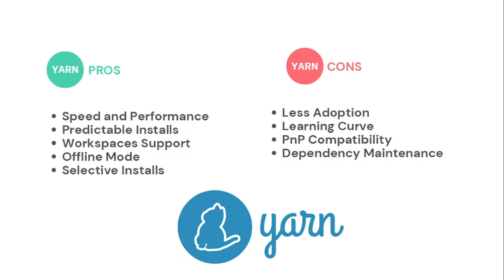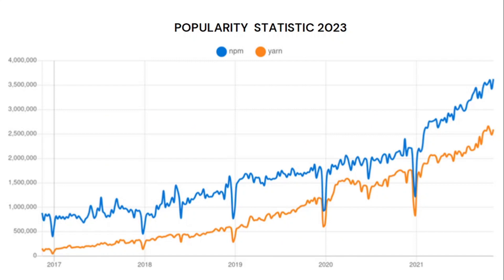yarn also has a selective installation feature, allowing you to install packages for development mode and production mode separately. Now for the cons of yarn: less adoption because yarn is not as popular as npm and it's newer to the market. There's also a learning curve, and the Plug and Play (PnP) feature may not be compatible with all existing projects and tools as they are still working on it. There's also dependency maintenance to consider.